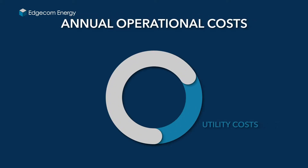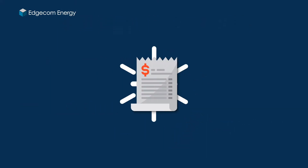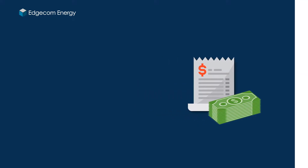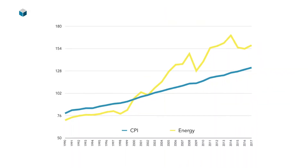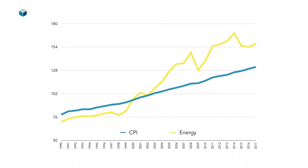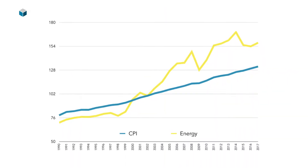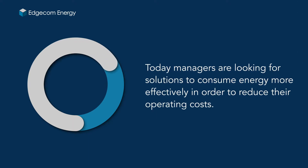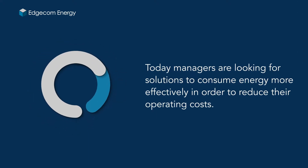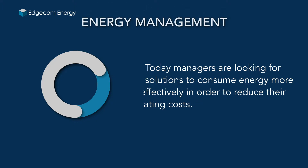Utility costs are a large portion of the annual budget in most industrial and commercial operations. In the past, you received the utility bill and paid it. In the modern days with ever-increasing energy prices, that is not an option anymore. Today, managers are looking for solutions to consume energy more effectively in order to reduce their operating costs. This practice is called energy management.